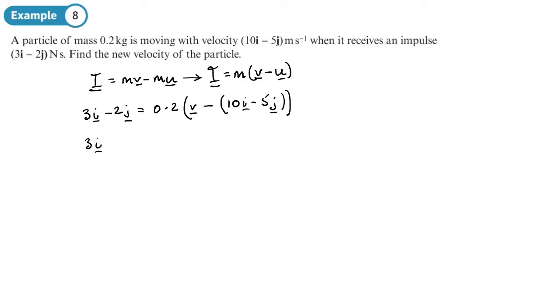So 3i minus 2j equals and then we're going to have 0.2v. So we're basically expanding the brackets now. Let's work out what that is. So 0.2 times by 10, that's a fifth of 10, that's going to be 2. So 2i minus 1j or j. So I've just worked out what 0.2 of this vector is.